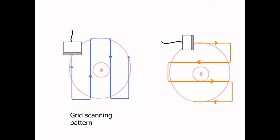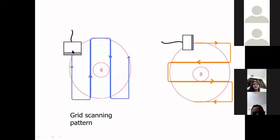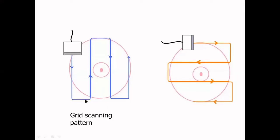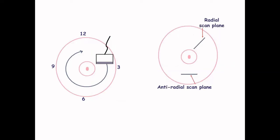There are various methods of scanning. In the grid scanning pattern, the transducer is oriented transversely and you scan from top to bottom in one line, then move medially and scan upward, repeating this pattern — longitudinal scanning with transverse probe orientation. Similarly, we do transverse scanning with the longitudinal probe orientation in a grid pattern, scanning right to left and back, to cover all areas of the breast.